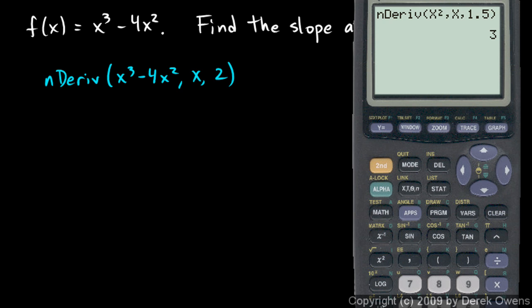So I'll hit math 8 and it says nDerivative. And then I'm going to type x cubed and I'll just do x to the power of 3 like that. x cubed minus 4x squared comma. So that's my function and then comma. So the derivative of that function when x comma is equal to 2. And I like to hit the closed parentheses and then hit enter.